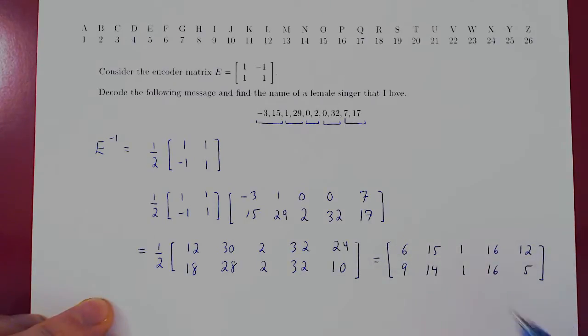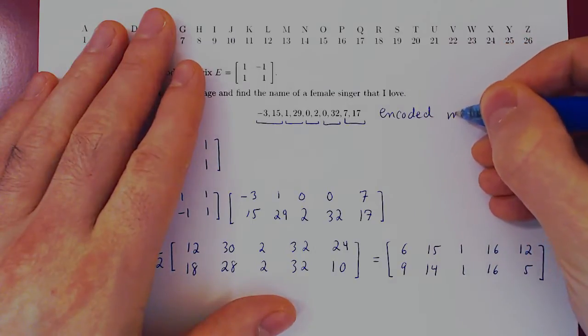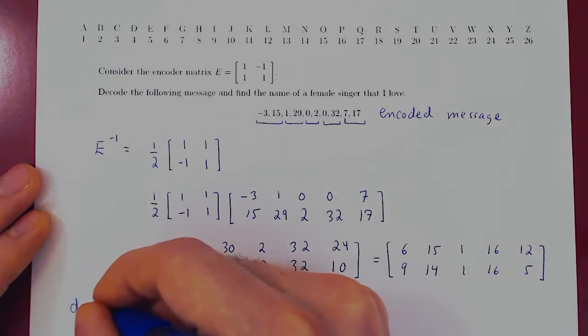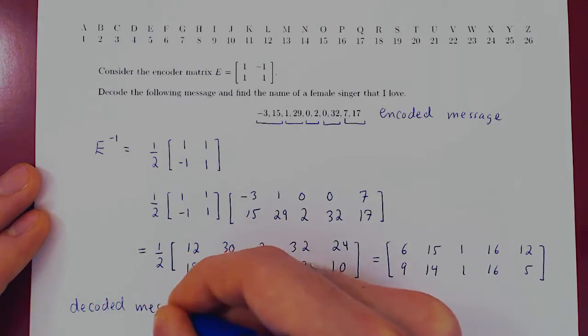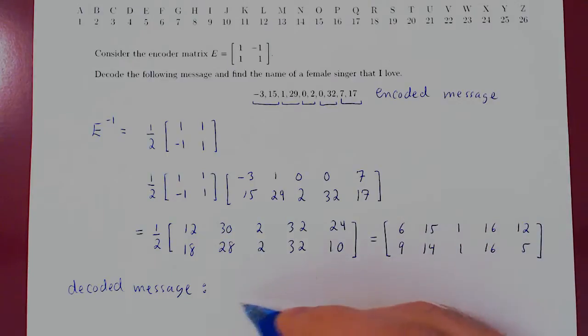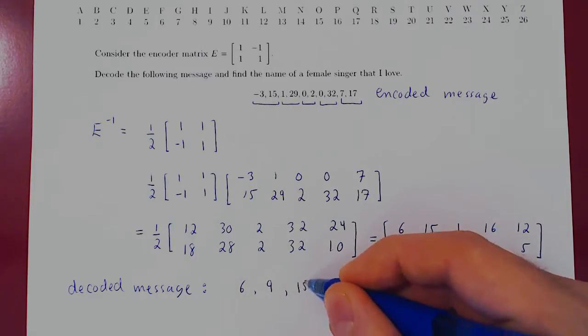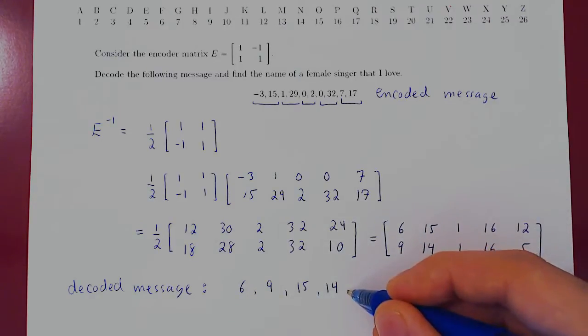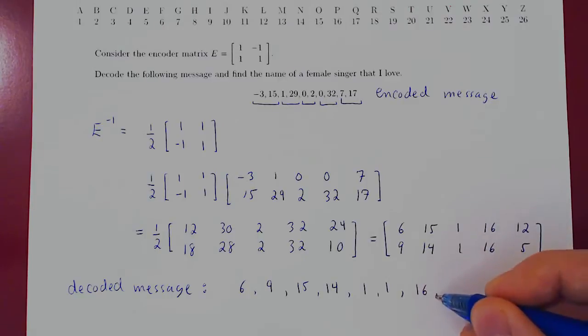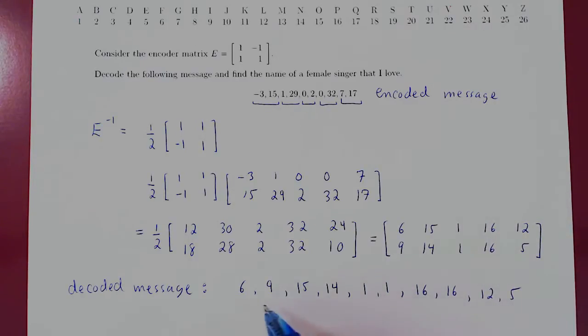Let's rewrite this into a string of characters. Right? This was the encoded message. And I will have the decoded message. Well, the first column becomes the first string of two characters, so 6, 9. The second column, the second string, 15, 14. Third column, third string, 1, 1. Fourth column, fourth string, 16, 16. And fifth column, fifth string, 12, 5. And now we have the decoded message.